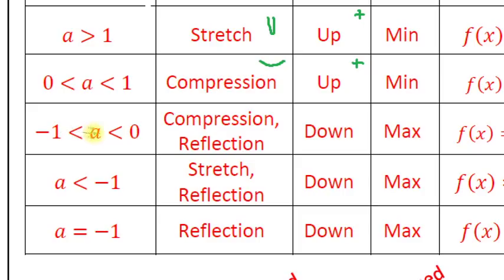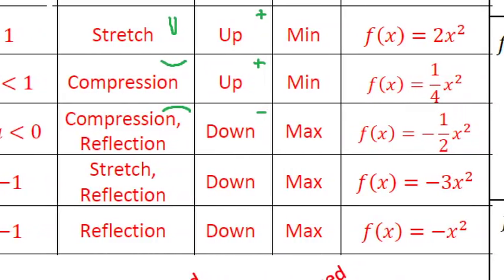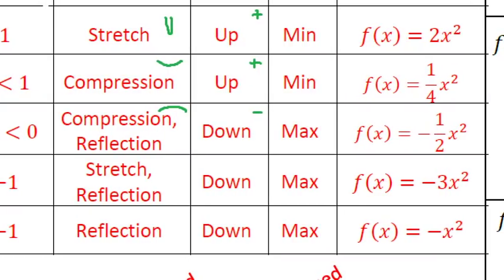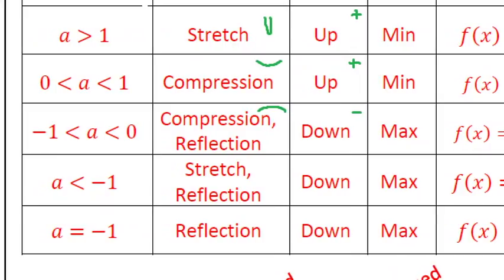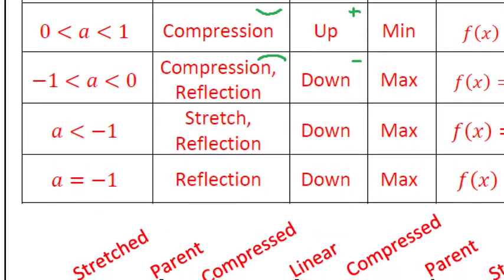What if a is between -1 and 0 — less than zero but greater than negative one? This looks a lot like the previous case, only now a is negative. So not only does the fractional value of a create a compressed graph, it also reflects it — flips it upside down. You get a wide but inverted graph. Because a is negative, the parabola faces down, meaning the vertex is a maximum. An example is f(x) = -½x²: the negative makes the parabola face down, and the ½ makes it compressed.